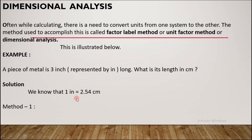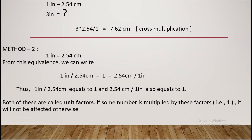We know that 1 inch is equal to 2.54 centimeters. Think of it like this: one chocolate costs 5 rupees, so two chocolates cost 10 rupees. The same way, 1 inch equals 2.54 cm, so 3 inches obviously equals 3 × 2.54 centimeters.